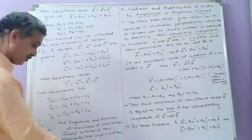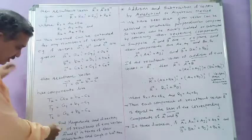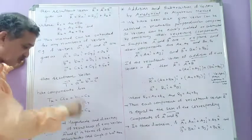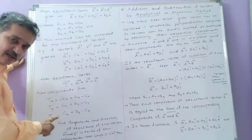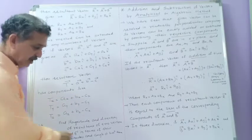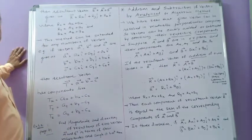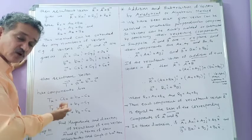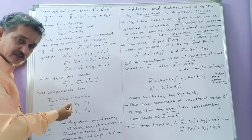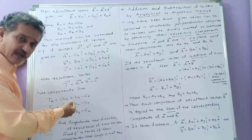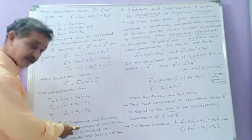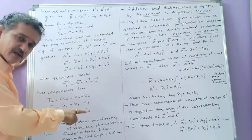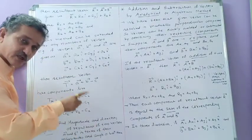Now you have to look at the next example from your textbook: find the magnitude and direction of the resultant of two vectors A and B, expressing the resultant vector R in terms of the magnitudes of vector A and vector B, as well as the angle theta between the two vectors. You need to find both the magnitude and the direction of the resultant vector in terms of the magnitudes of A and B and the angle theta between them.